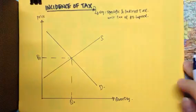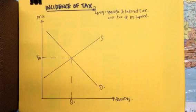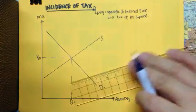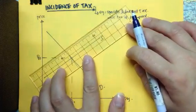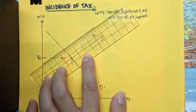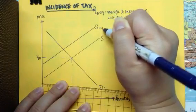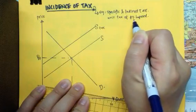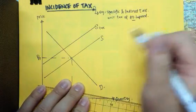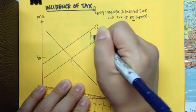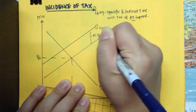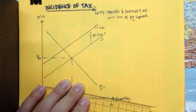So what will happen? The supply curve will shift up by the amount of tax imposed. So this is my supply with tax. And since it is a unit tax of $5 imposed, it means that the distance, vertical distance over here is $5, which is the unit tax imposed.